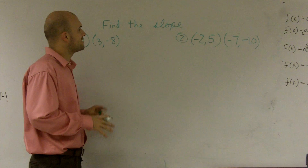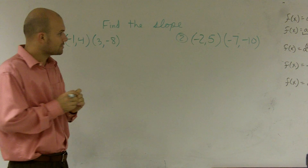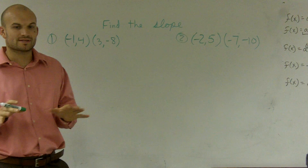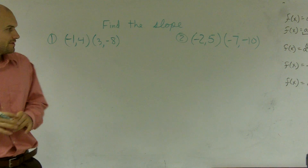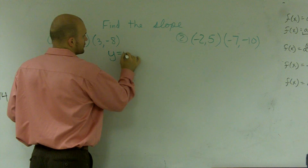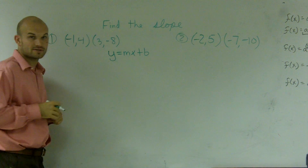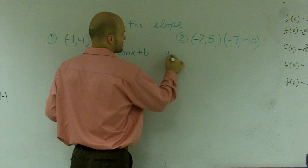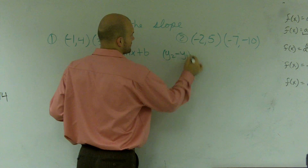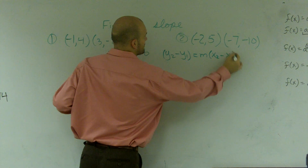What I'd like to do is show you how to find the slope when given two points. What we're going to do is use the point-slope form of an equation. To remember what the point-slope form is, maybe you might be used to looking at the slope-intercept. The point-slope form just says: y2 minus y1 equals m times x2 minus x1.